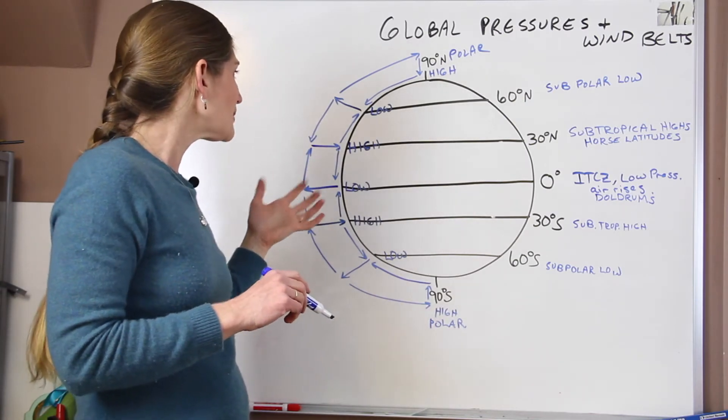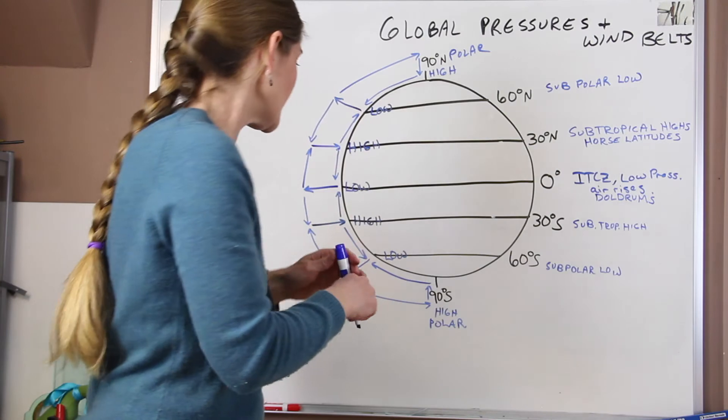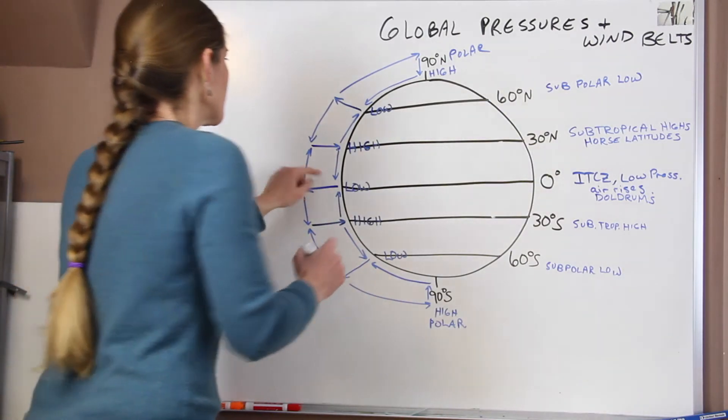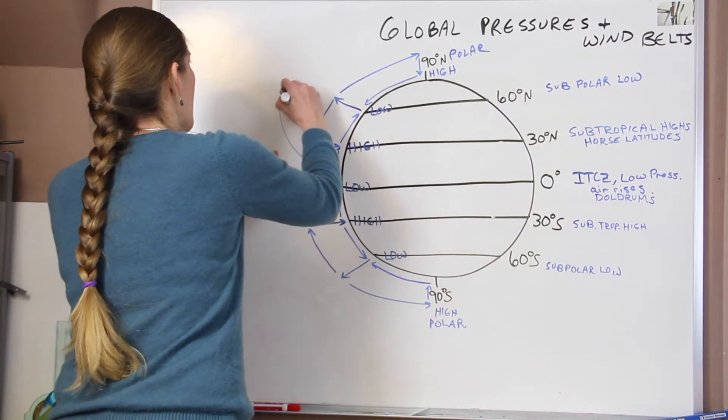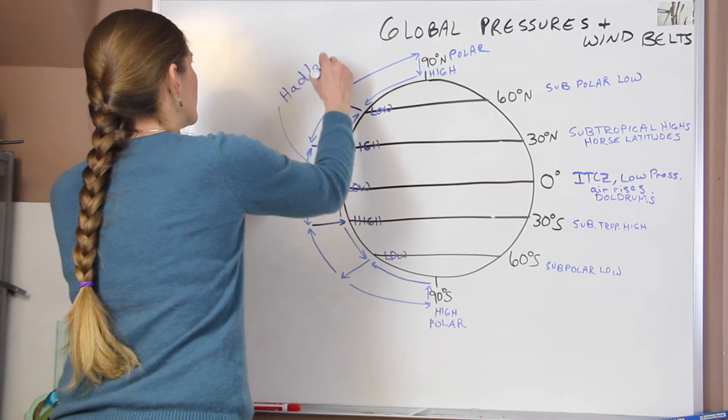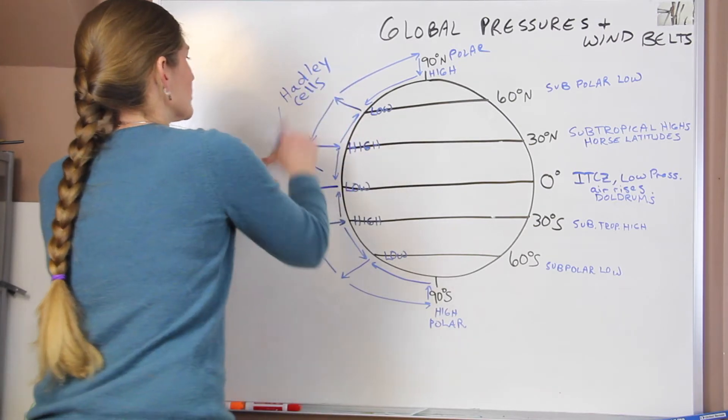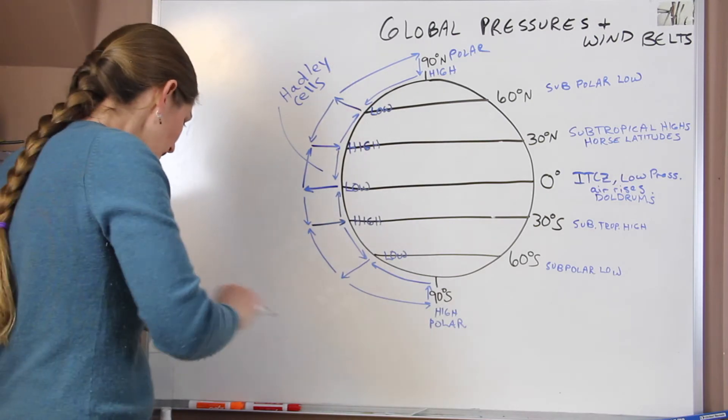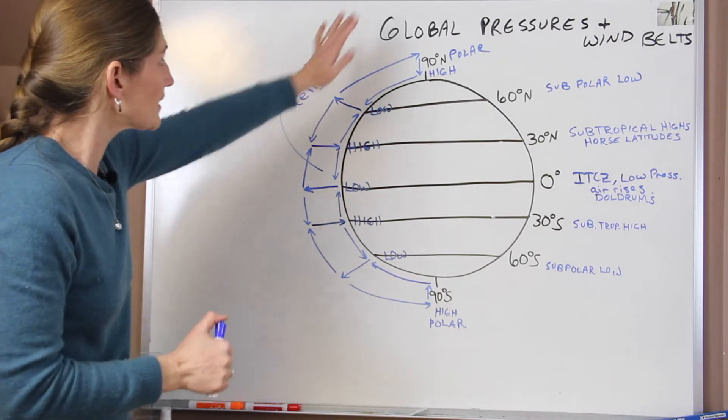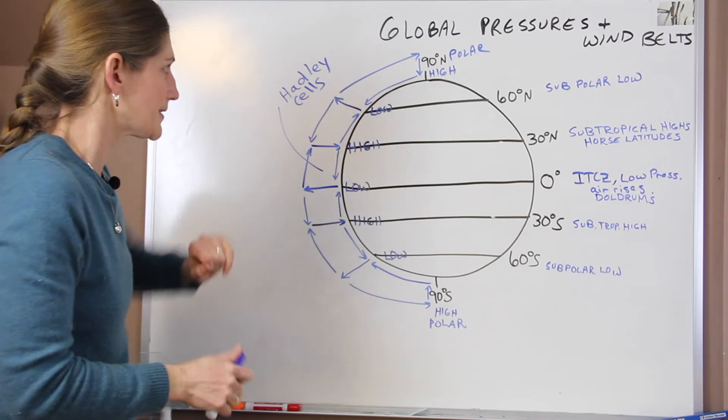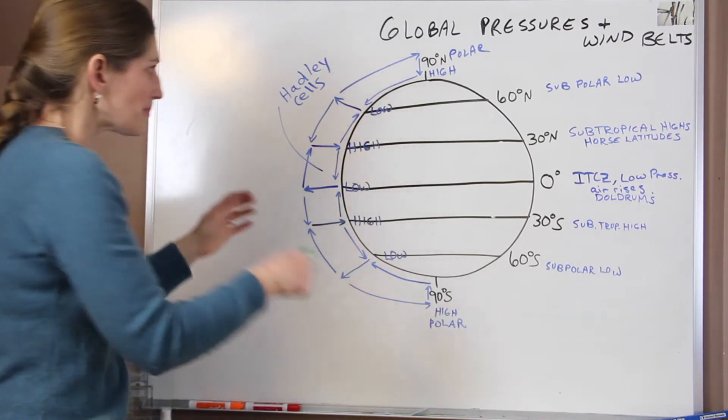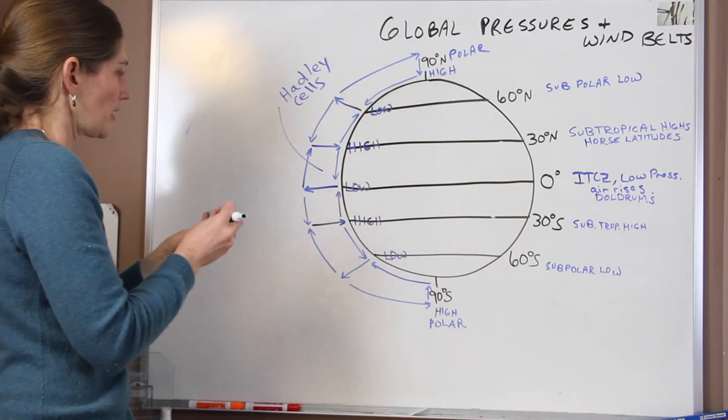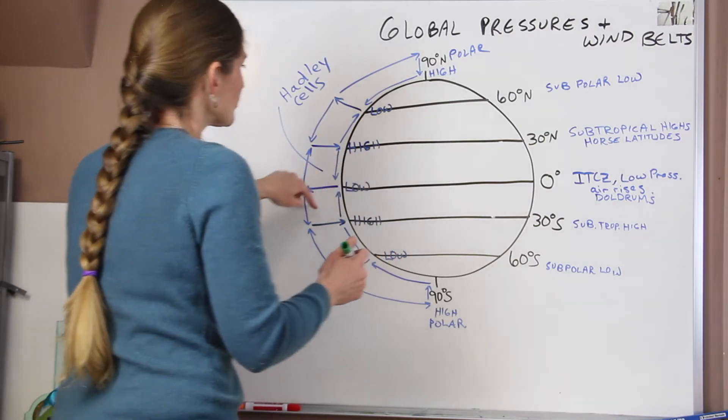So what's happening in between these? Now that we kind of have this circular system, just to keep these in mind, if you're wondering, these are our Hadley cells. These are cells of the vertical circulation. But now what's going on with our global wind belts? That tells us the global pressure systems. But what's happening with the winds? Well, the wind moves from high to low.